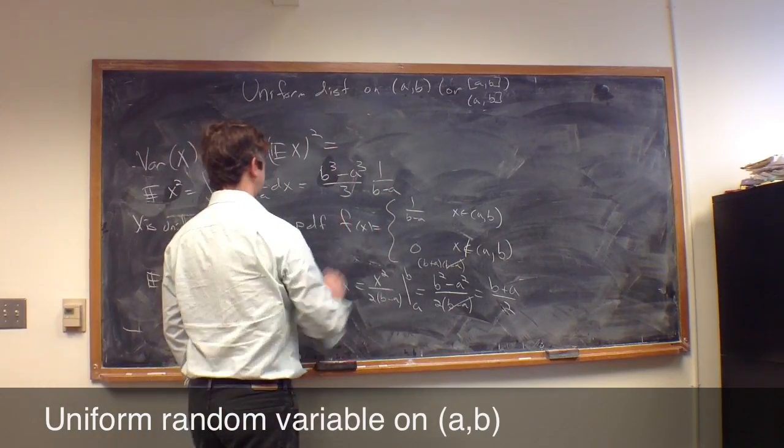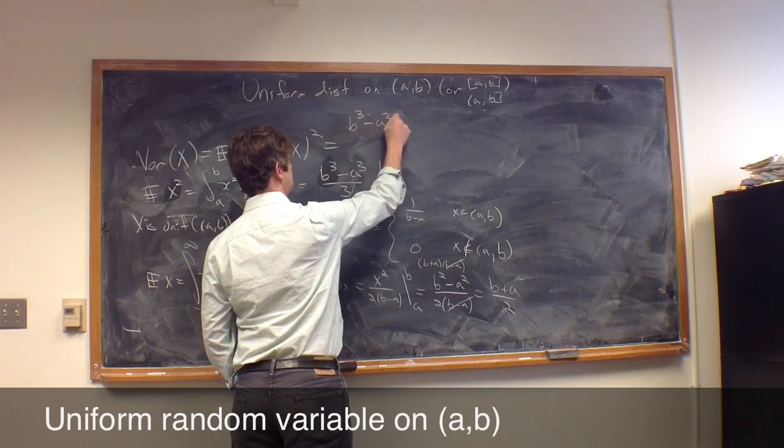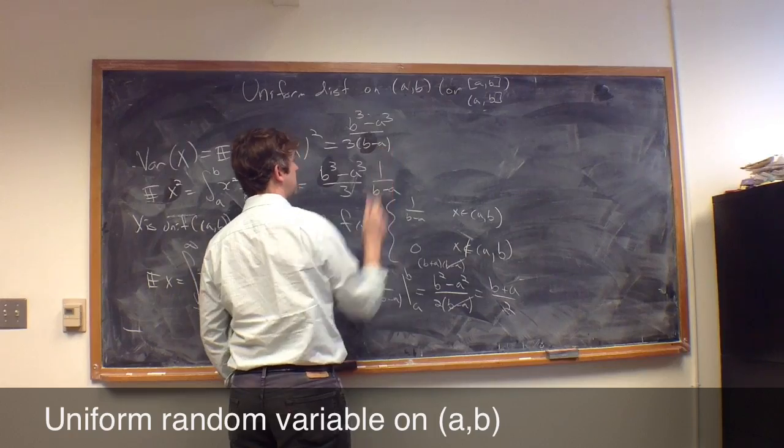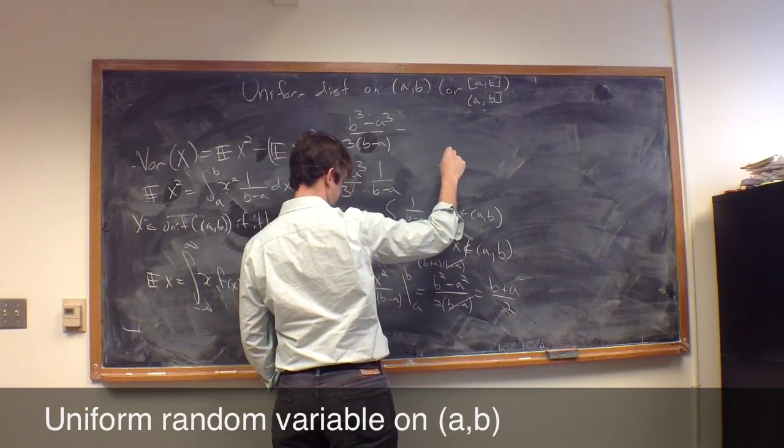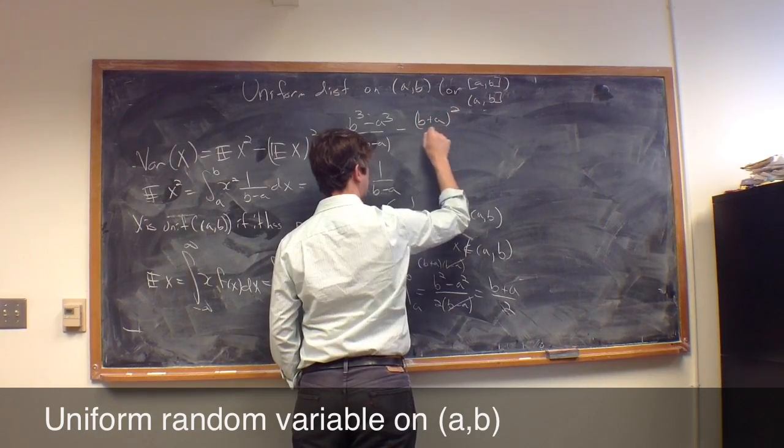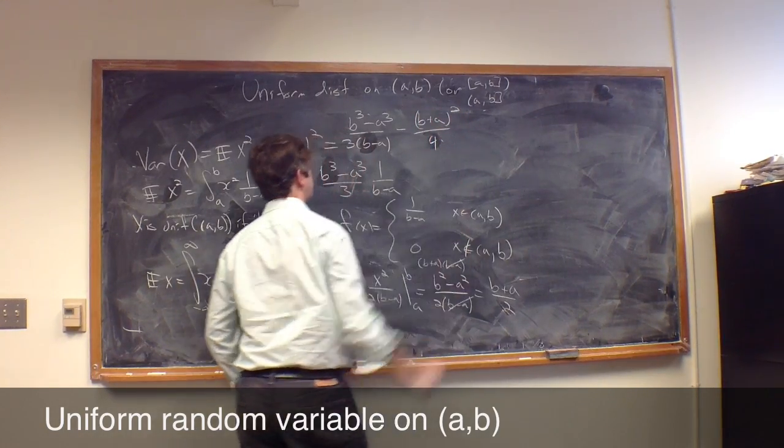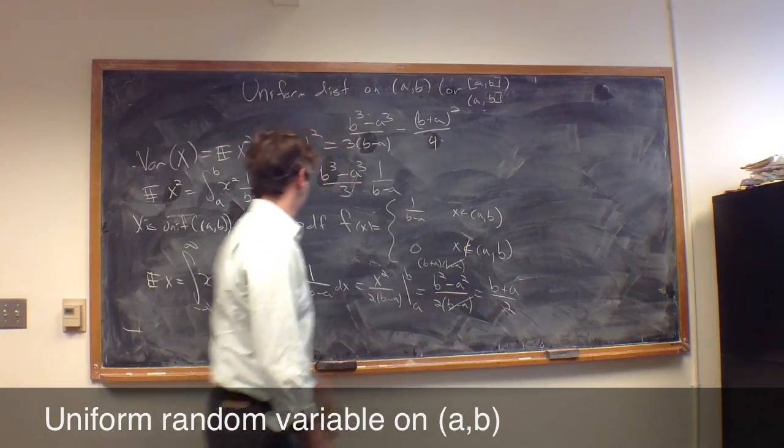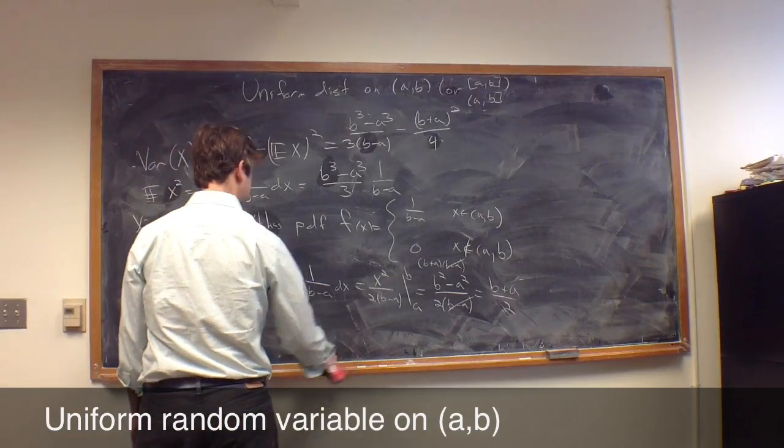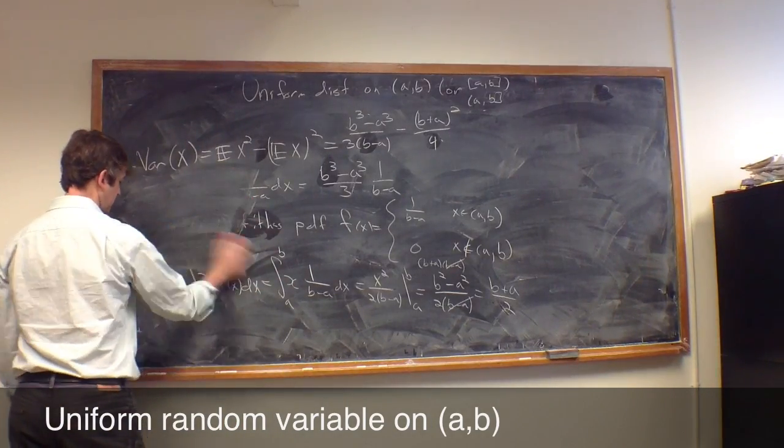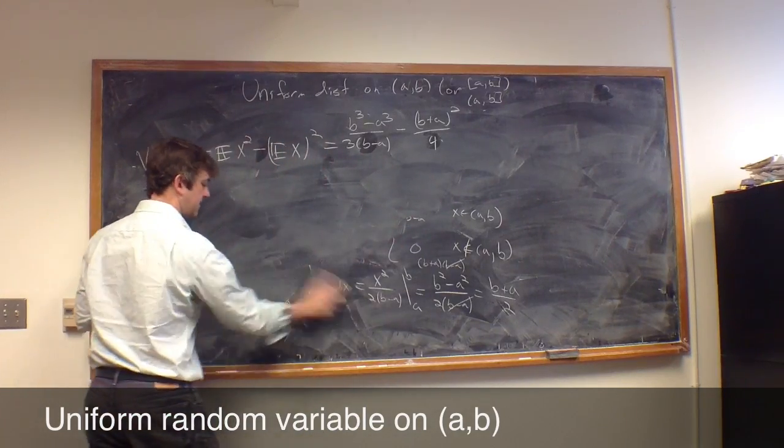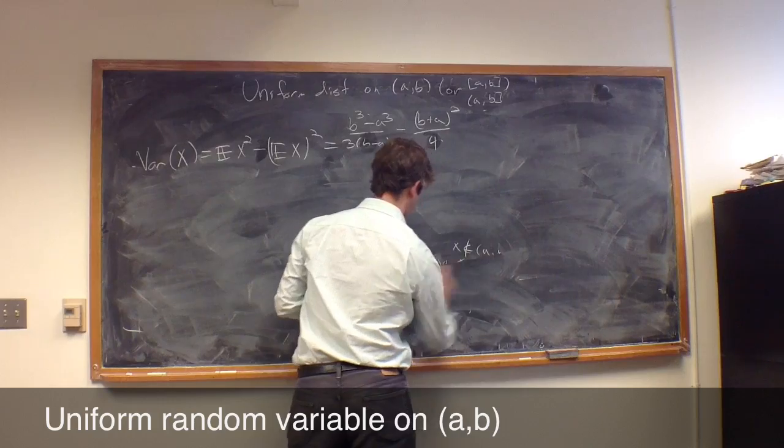So the whole variance is (b³ - a³)/(3(b-a)) minus (b+a)²/4. That's a bit complicated and we could simplify that, but before we do, let's actually see what these values are in a specific case and then use that instead to calculate. As an exercise, you should go ahead and simplify this expression for the variance.